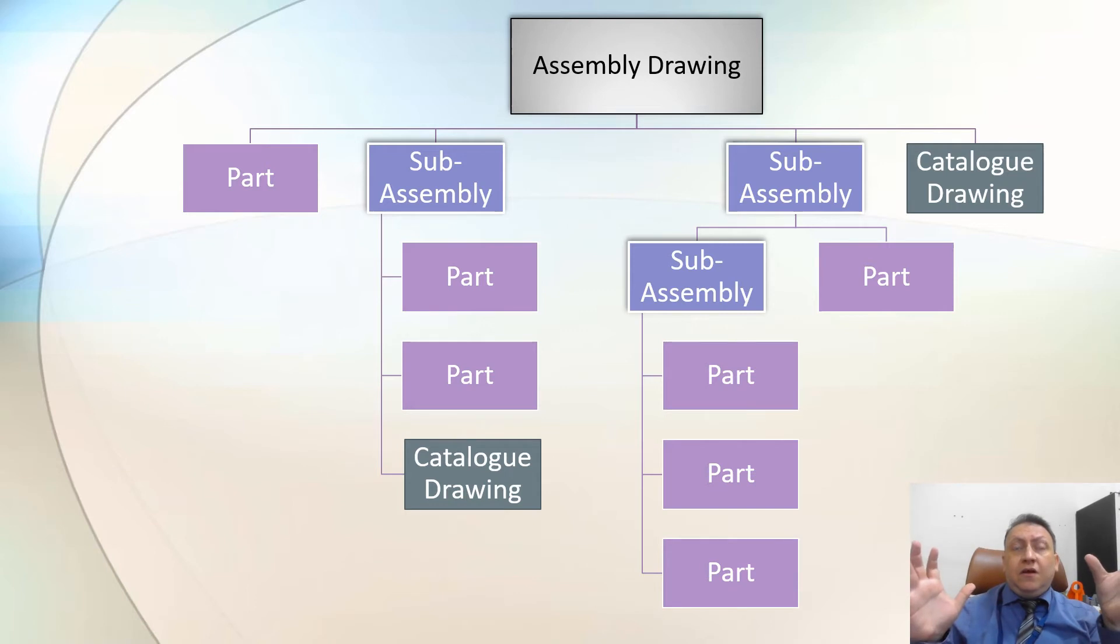As an example, you have engine or design or any kind of component, and you have handle. This handle, you just manufacture the handle and you put it on the top of assembly so you can carry it, carry the assembly. So this handle is a part. Then you have catalog drawing, which is for standard item. So let's go into details and explain more about sub-assembly drawing.